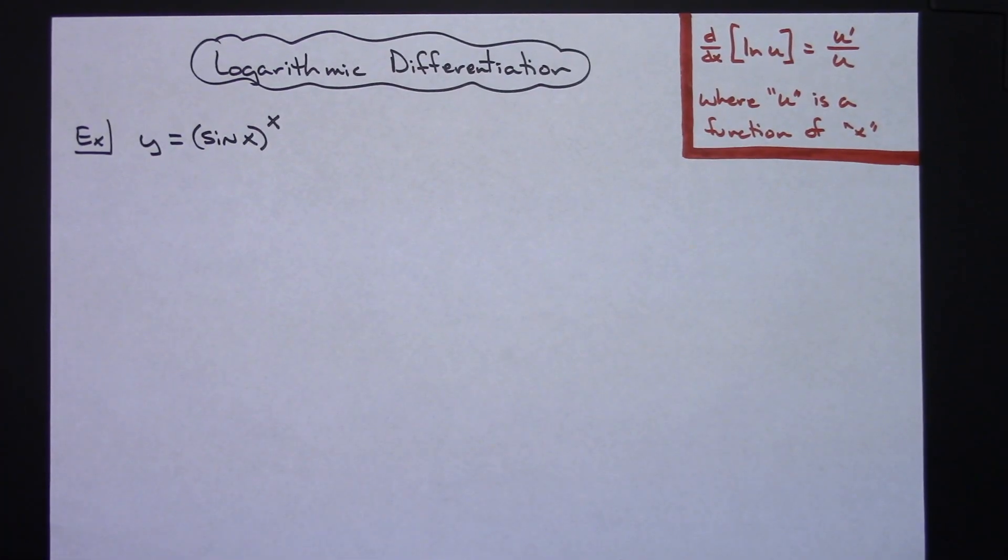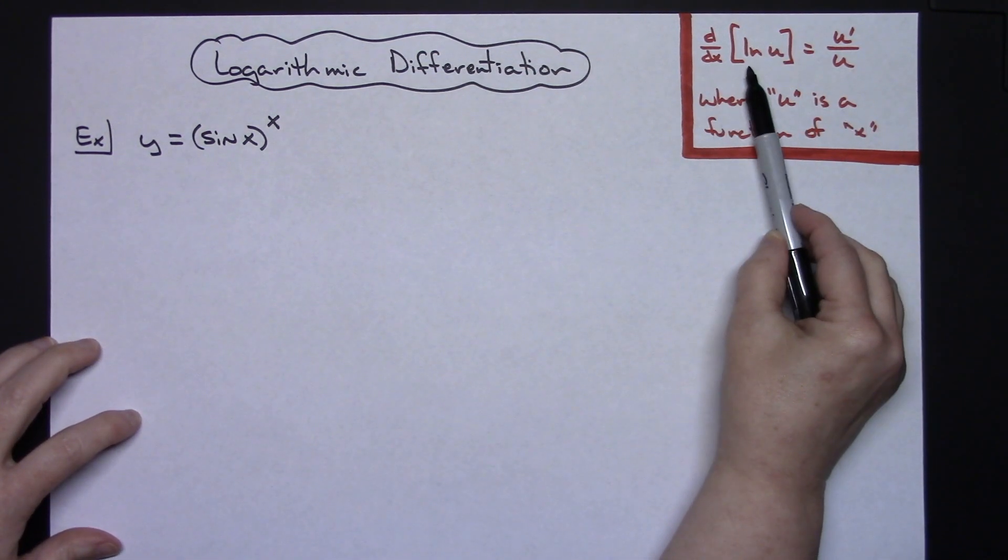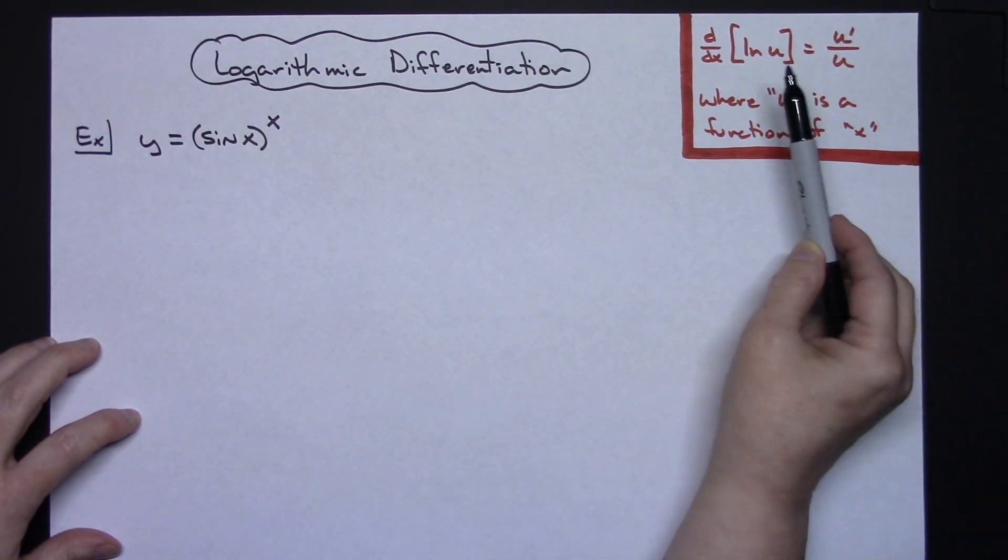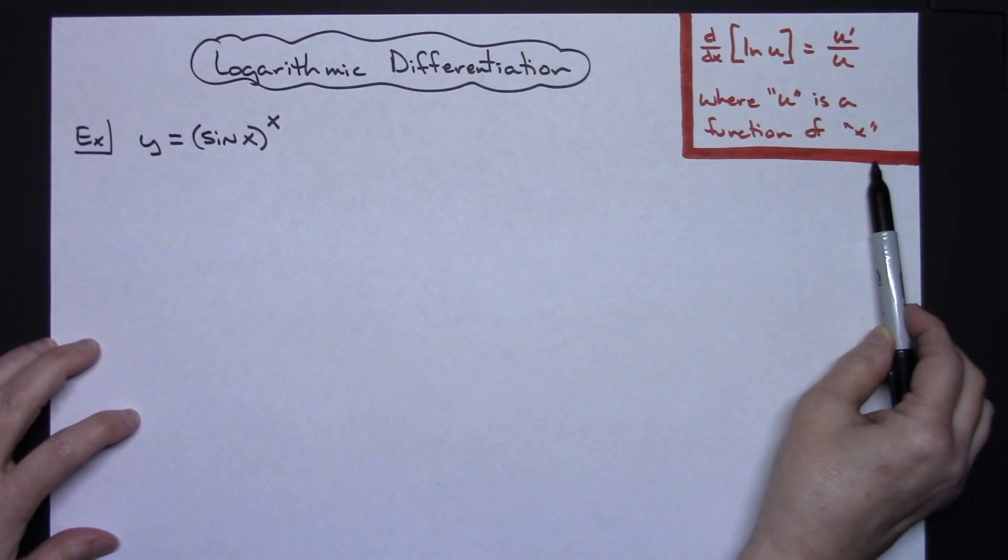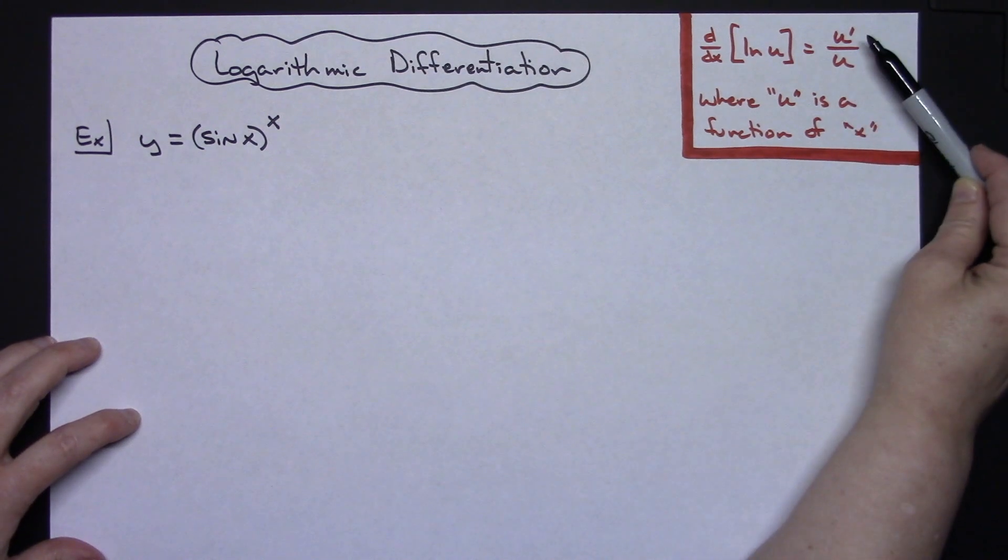In this video I'm going to work out one example of logarithmic differentiation. It is going to involve taking the derivative of the natural log function, so over here I've got d/dx of natural log of u is going to be equal to u prime over u. So there's my derivative, keeping in mind u is a function of x.